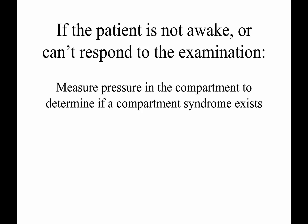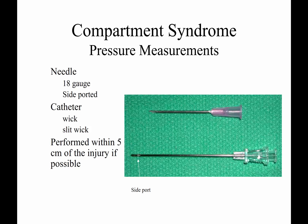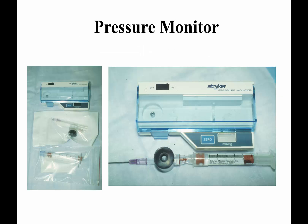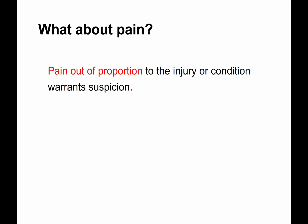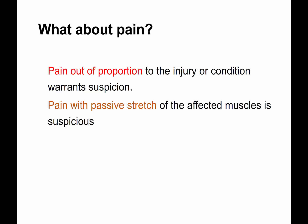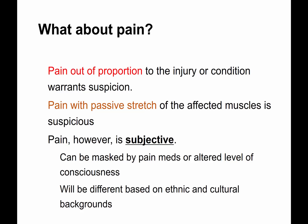If you can't communicate well with the patient and you are concerned, you might have to measure compartment pressure. You can use an arterial line with a pressure transducer, a standard needle, a side-ported needle if available, or a handheld pressure monitor. It's an invasive procedure traditionally. Pain is subjective — pain out of proportion is what you want to look for, and pain with passive stretch is perhaps a little more objective. Overall, pain can be masked by pain medications or altered levels of consciousness, and will differ based on ethnic and cultural backgrounds.